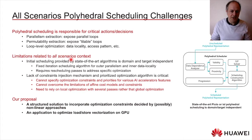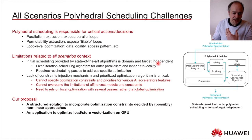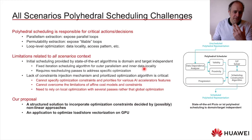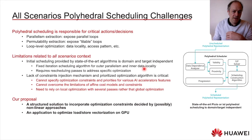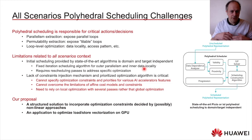Starting from an unscheduled polyhedral representation, the scheduler finds a scheduled polyhedral representation. Unfortunately, in the all-scenario context, state-of-the-art polyhedral scheduling has a big limitation: it is a domain- and target-independent black box. Whatever the architecture, the most efficient algorithm works the same way — extracting outermost parallelism and optimizing data locality. When we need to improve something, we must add a rescheduling path in the compiler after polyhedral scheduling, making the compiler more complex and the optimization less efficient, because optimizations are applied sequentially rather than globally.